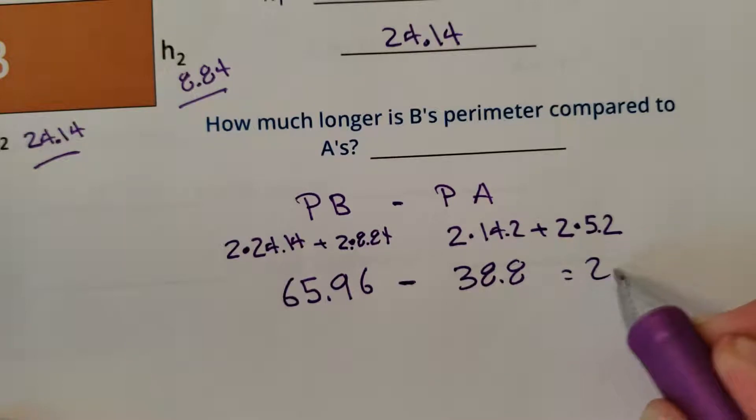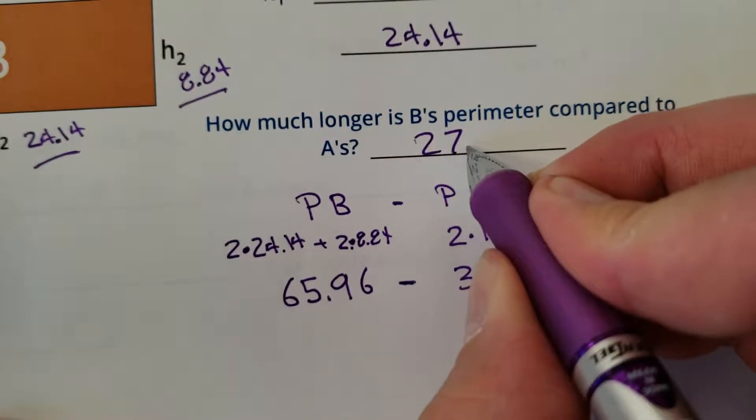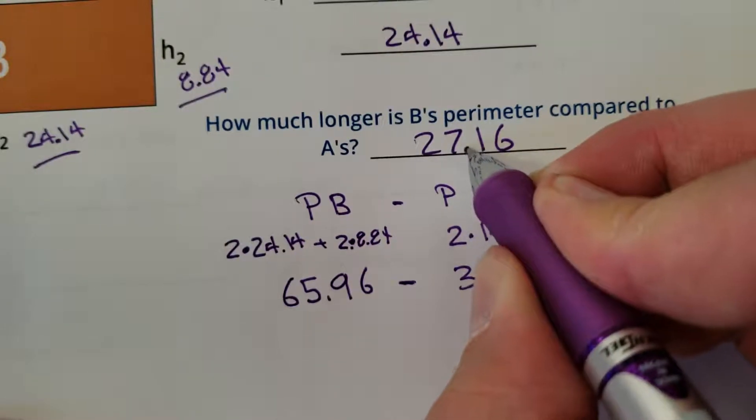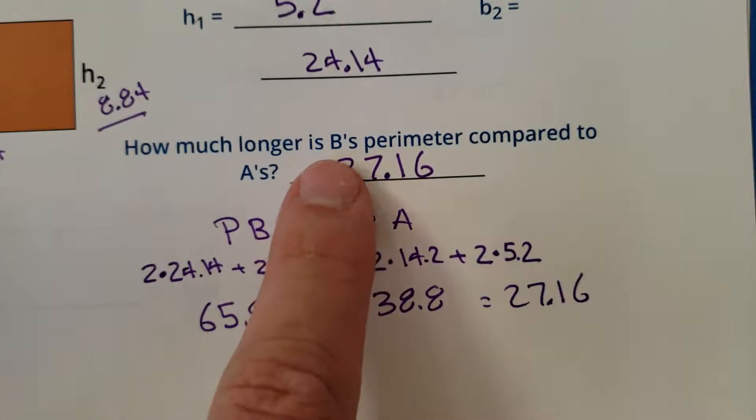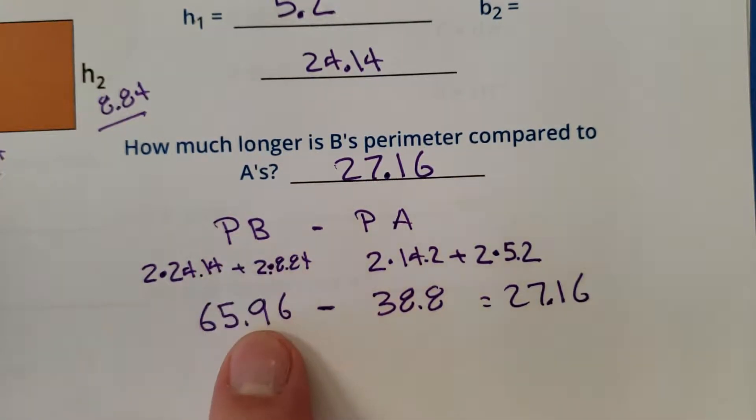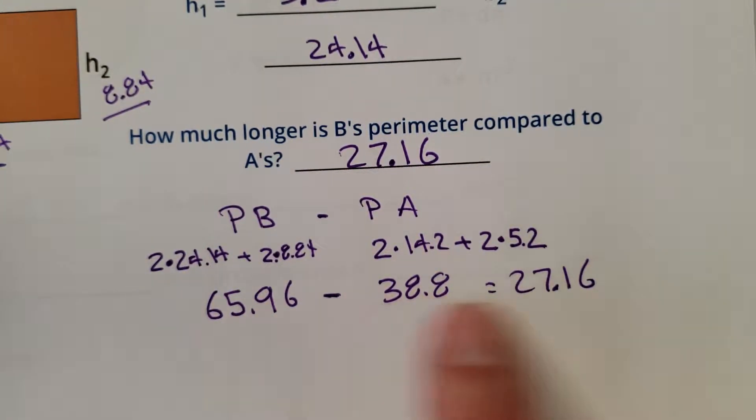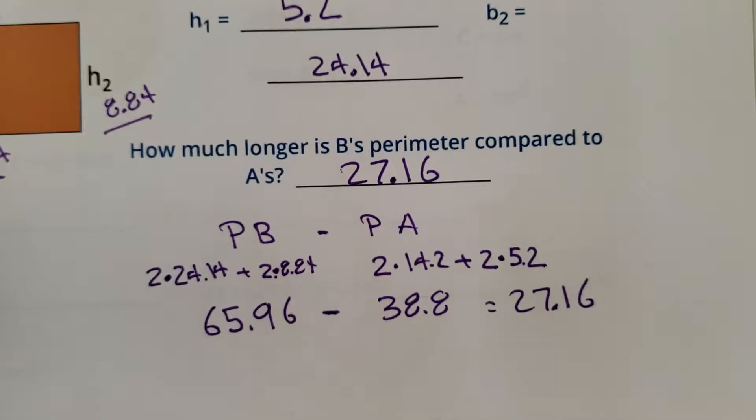27.16. All right. So there we go. How much longer is B's perimeter compared to A's? Find B's perimeter. Find A's perimeter. Do the subtraction. Include all the decimals and then you win.